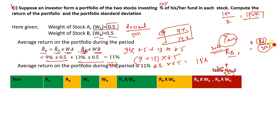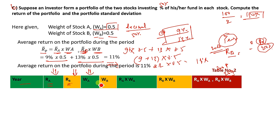We will make a table in order to calculate the standard deviation. We will try the same question using a table. Stock A will be shown in green and Stock B will be shown in yellow. The weight of Stock A equals green and the weight of B equals yellow.